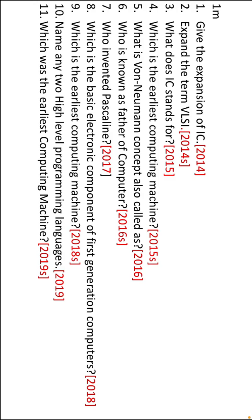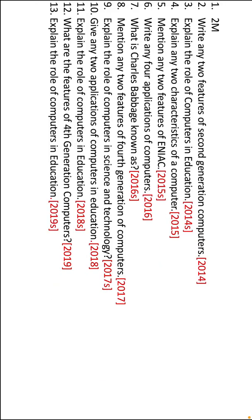These are the two-mark questions from 2014 to 2019. Almost all of them ask about the different generations, different components of different generations, the role of computers in education and science, ENIAC applications, and computer roles in science and technology. In particular, the role of computer in the education field has been asked almost four times, so remember all the generations, their components, and applications.